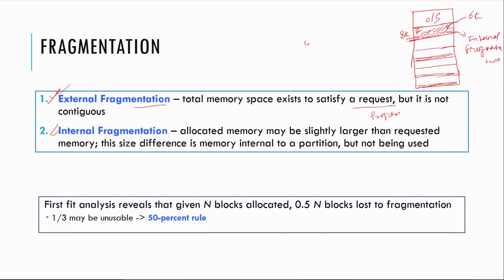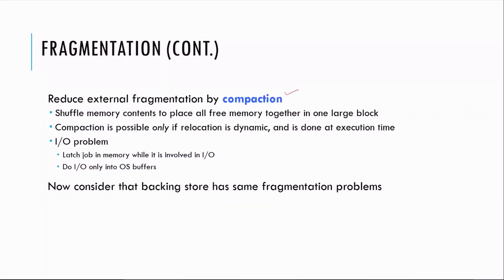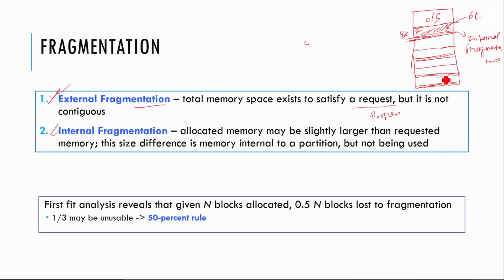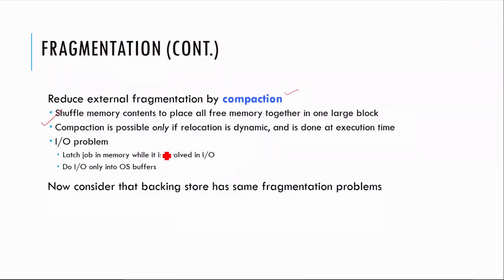External fragmentation means total memory space exists to satisfy a request, but the space is scattered and not contiguous. This fragmentation can be solved by the memory compaction technique. Whatever scattered spaces exist, we bring them all to one particular location so the total free space becomes one contiguous block, allowing a new process to be assigned. We shuffle memory contents to gather all free memory together in one large block. Compaction is possible only if relocation is dynamic and is done at execution time.